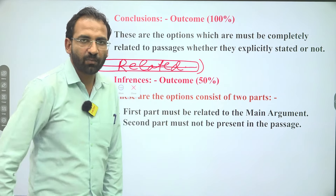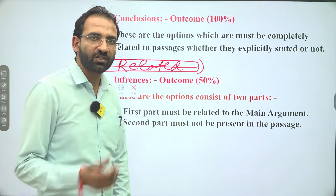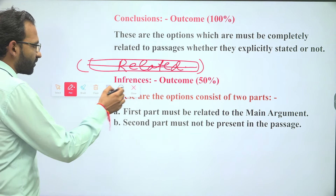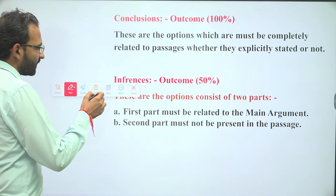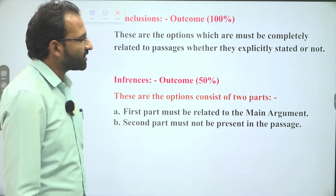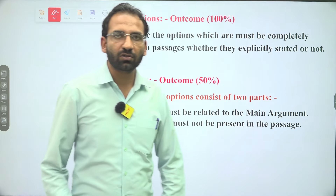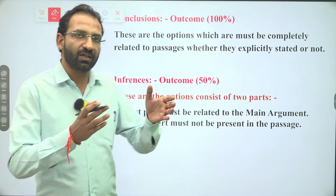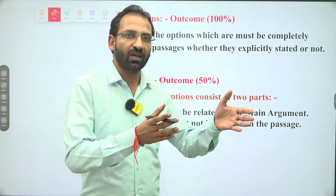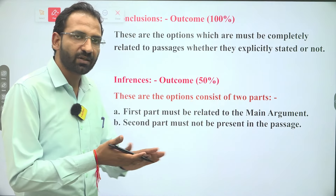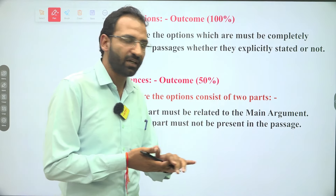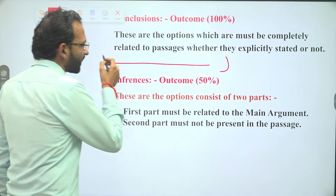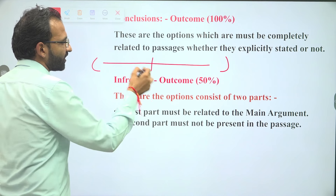Isme kuch bhi aisa portion nahi hona chahiye jo aapke passage se related na ho. Ab baat karte hain inferences ki. Inferences are also outcomes like conclusions — inferences bhi ek tarah ka result hota hai. But inferences se 50 percent passage se related hota hai.